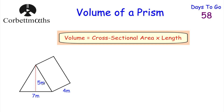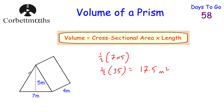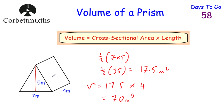To find the area of the triangle, we do half the base times the height. So we're going to do half of 7 times 5. 7 times 5 is 35, and half of 35 is 17.5 metres squared. Now to find the volume, we take the cross-sectional area of 17.5 and multiply by the length of the prism, which is 4. 17.5 multiplied by 4 is equal to 70 metres cubed — that's the volume of this triangular prism.